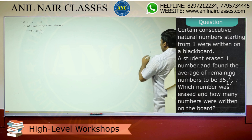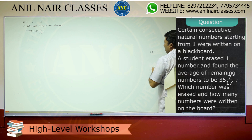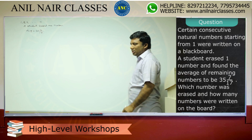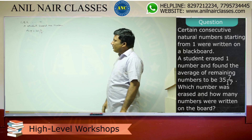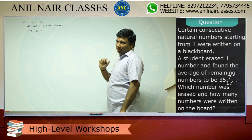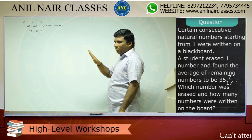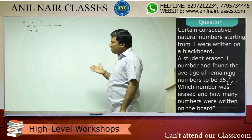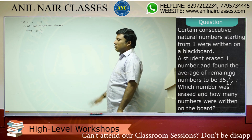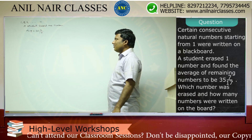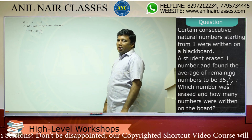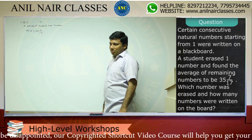Again, I am repeating the question. There are certain consecutive natural numbers starting from one which are written on a blackboard. A teacher asks a student to find out the average. A student erased one number and found out the average of the remaining numbers to be 35 and 7/70. How many numbers were written on the board and which number did the student erase?